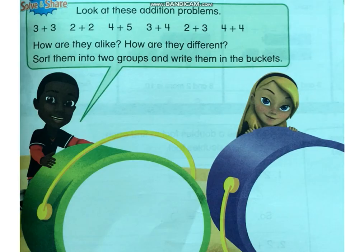Look at the picture. You can see there's a boy and a girl holding two buckets. And there are numbers at the top. How are the numbers alike? How are they the same? And how are they different? We need to put them in two groups. We're going to put the numbers that are the same with the boy, and the numbers that are different with the girl.